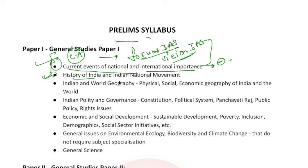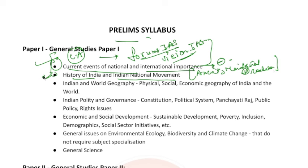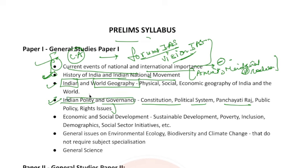Then, you have to study the history of India and the Indian national movement. So, you have to study ancient history, medieval history, plus modern history. Modern history covers the Indian freedom struggle. Then, you have to study Indian geography and world geography. Then, you have to study political topics — constitution, political system, Panchayati Raj, public policy, rights and issues — that means Indian polity and governance, you have to cover both.